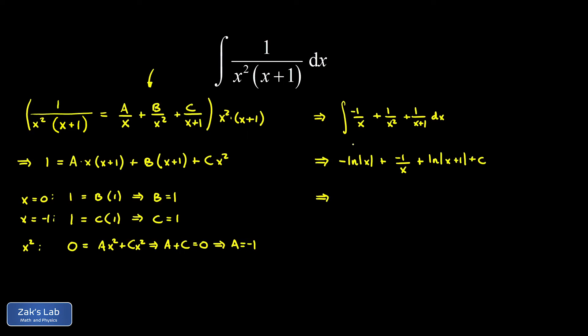To clean things up, we can use log properties to combine negative natural log absolute value of x and natural log absolute value x plus 1. The difference of two natural logs is the natural log of the quotient. We end up with natural log absolute value x plus 1 divided by x, minus 1 over x, plus c, and we're done.